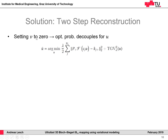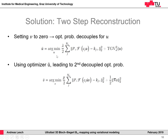In the first step, we set V to zero, which gives an optimization problem that decouples for U. This resulting optimization problem is non-differentiable but convex, and this class of problems can be easily solved using the primal-dual algorithm. Once we have a solution for U, we plug it in as a constant into the previous optimization problem, gaining a new problem that is now decoupled for V. In the second step, we solve this optimization problem, which is differentiable and convex and can be easily solved using the conjugate gradient algorithm.